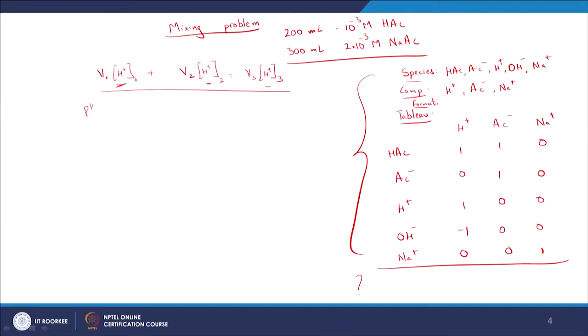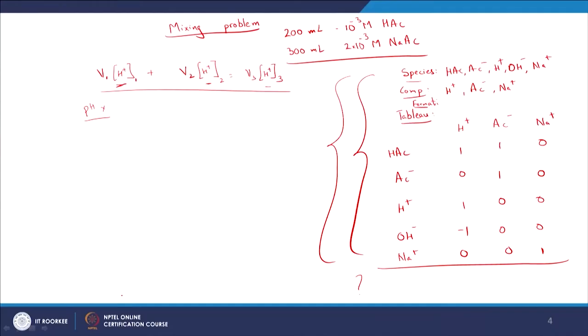You also cannot do a balance on pH. You need the component balance solution. The conservative quantity depends on the components - they are conservative by definition. H_total stays the same: it can be in HAc or as H⁺ or consumed by OH⁻, but total H is always conserved. Similarly, acetate can be in HAc or as acetate ion, but the total acetate stays the same. That is the conservative quantity we look at.